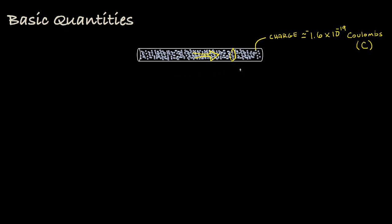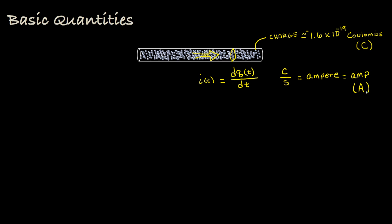Mathematically, we look at the amount of charge that passes through a cross section as a function of time and see how much that changes with time. That quantity, which has units of coulombs per second, we refer to as the electrical current. One coulomb per second is called an ampere — more commonly just an amp — denoted with a capital A. Though electrons are the fundamental elements, we'll almost always think about their rate of movement in terms of this quantity called electric current.